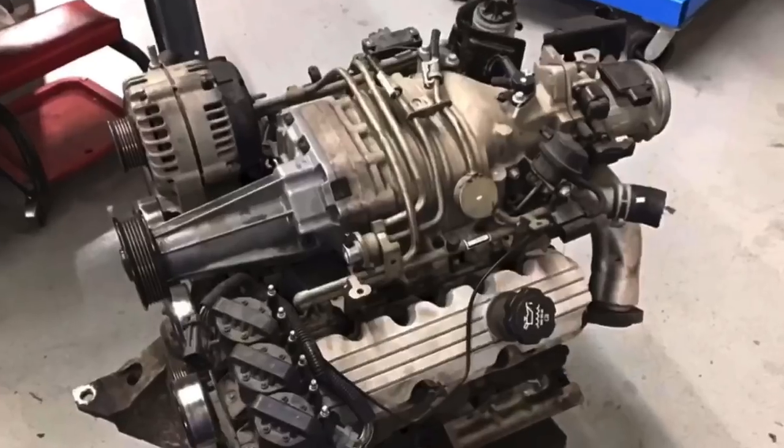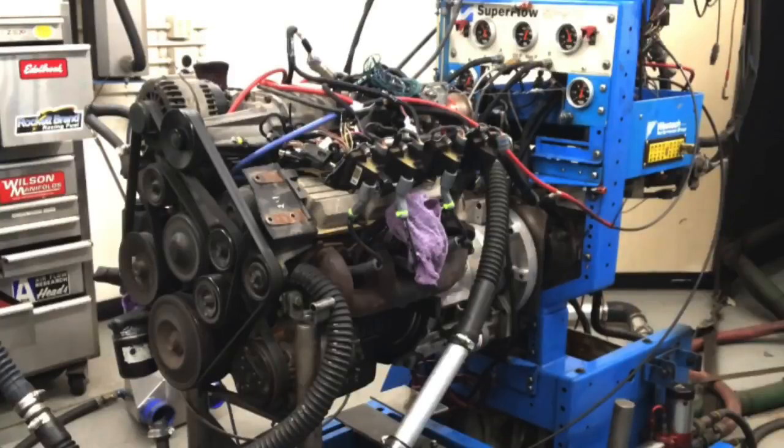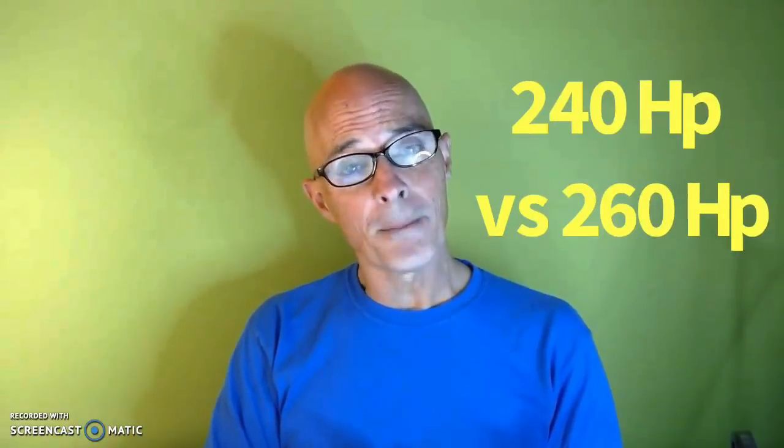Hey guys, Richard Holdner here and welcome to the channel. What's the difference between a Series 2 L67 3800 Supercharged V6 and a Series 3 L32 Supercharged 3800 V6? One of them is rated 20 horsepower better, but what do they do on the dyno?